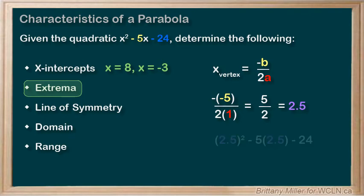We then need to plug that into our function to find the y value. 2.5 squared minus 5 times 2.5 minus 24 is equal to negative 30.25.